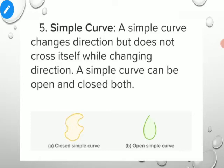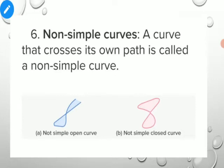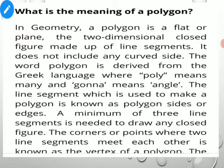A simple closed curve changes direction but does not cross itself while changing direction. A simple curve can be both open and closed. Such curves which do not intersect themselves at any point are called simple curves. A non-simple curve is a curve that crosses itself — for example, a curve crossing its own path is a non-simple curve.